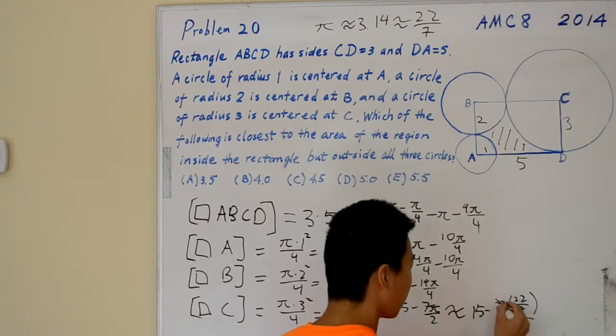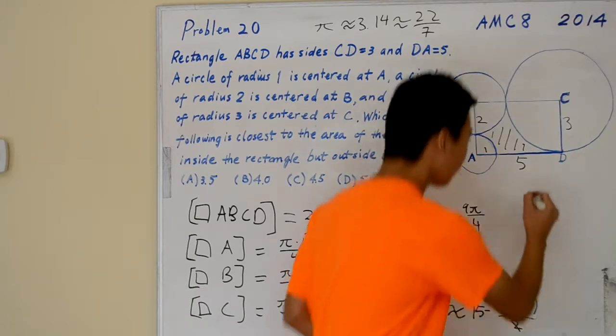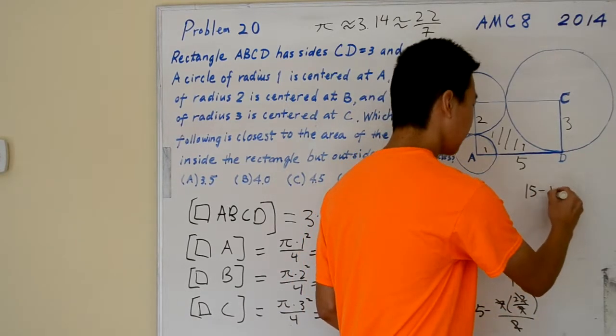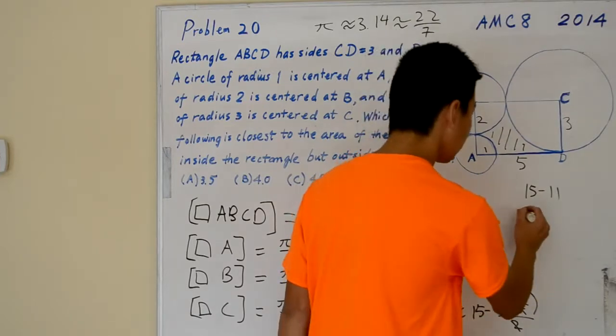The 7s cancel out, the 2s cancel out, so we end up with 15 minus 11, which equals 4.